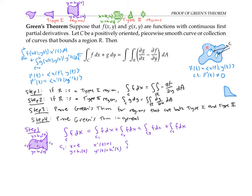The integral over C₁ of f dx is by definition the integral of f(x(t), y(t)) times x'(t) dt. That goes from t equals a to t equals b, since our curve starts at x equals a and ends at x equals b. Substituting in, this is the integral from a to b of f(t, h₁(t)) times one dt. For C₂, since that's just a vertical line, it can be parameterized as x equals b, y equals t, so x'(t) equals zero — meaning the integral of f dx gives zero and doesn't contribute.